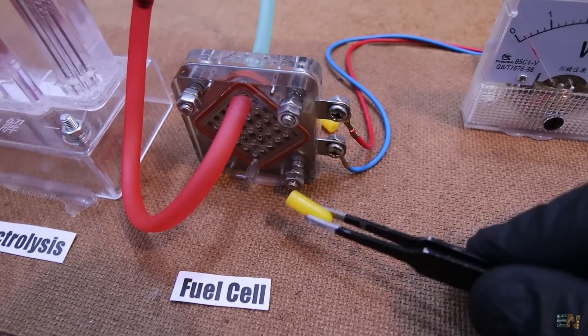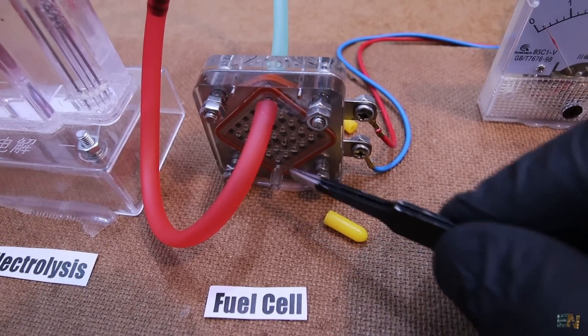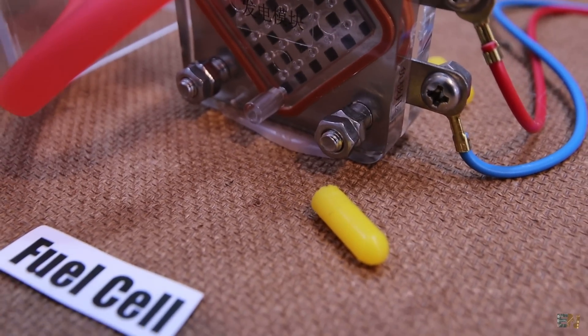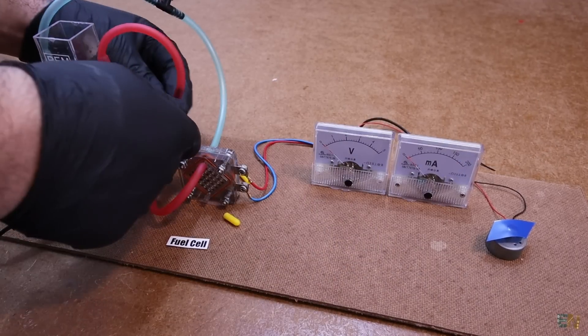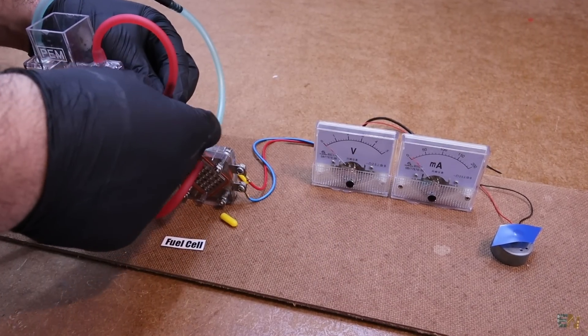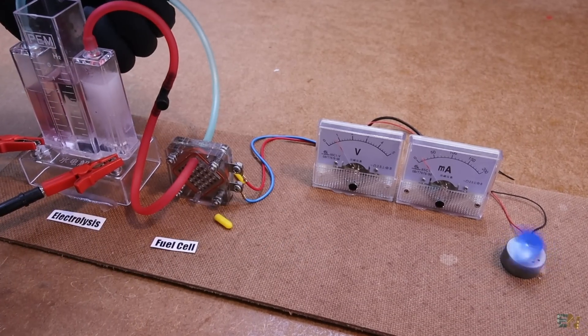And for this to work, we need to take out the yellow rubber caps so the gases could flow. I didn't know that. So I take those out and I open the valves and the fuel cell is now fed with gases. And just like that the motor starts to spin.